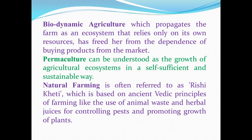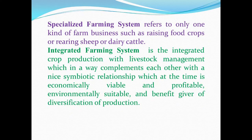Natural farming is often referred to as Rishi Kheti, which is based on ancient Vedic principles of farming such as the use of animal waste and herbal juices for controlling pests and promoting plant growth. Rishi Kheti uses cow products like buttermilk, milk, curd and urine for preparing growth promoters. It is also called non-violent farming and Fukuoka farming — Fukuoka being a Japanese agriculturalist.